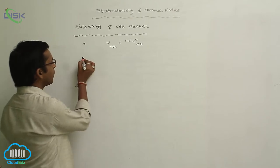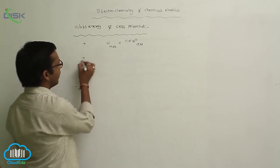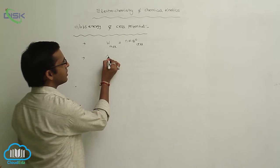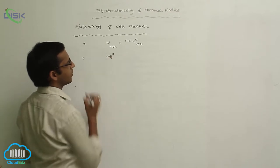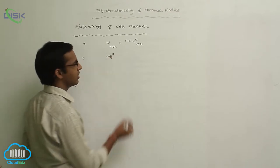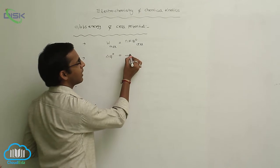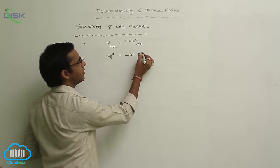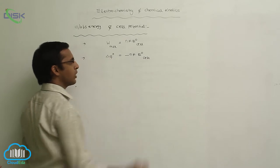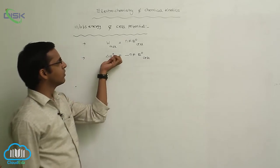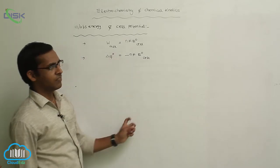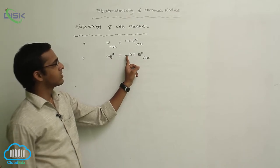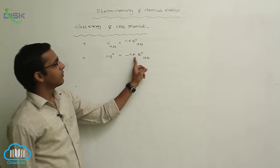In a thermodynamic process, the change in Gibbs energy, delta G naught, is equal to minus NFE naught cell. So the Gibbs energy value equals negative NFE naught cell.